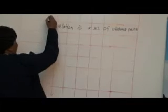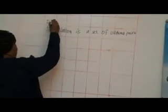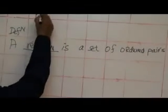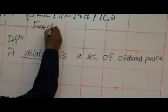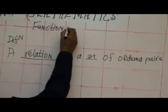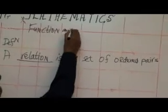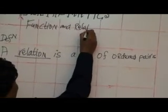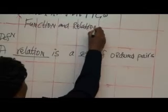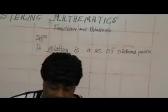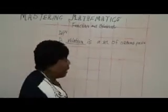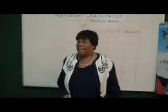So that is what we are saying — a relation is a set of ordered pairs. This is our definition. We are talking about relationship. The topic is functions and relations. And a relation is a set of ordered pairs. Now where have we been meeting ordered pairs already?